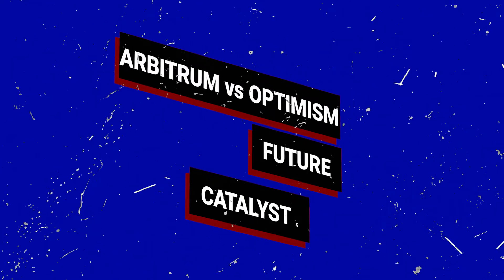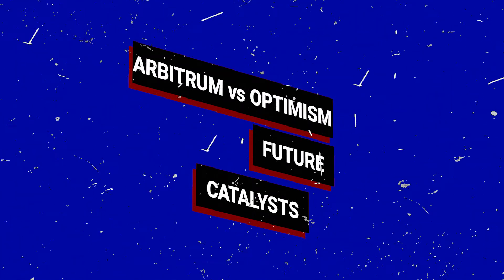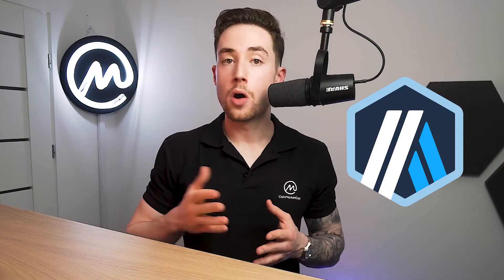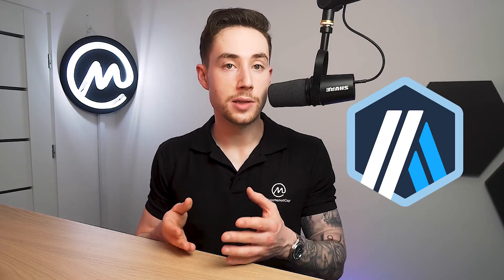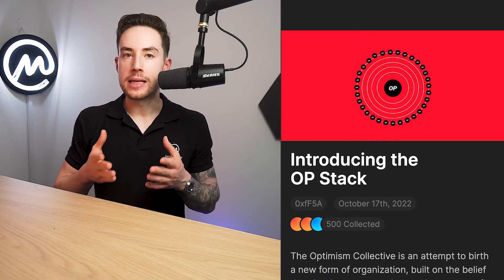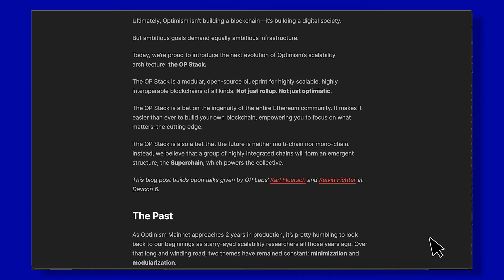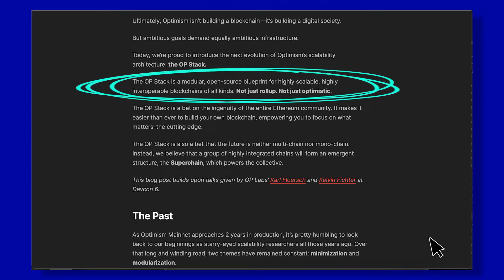Let's talk about Arbitrum versus Optimism and their future catalysts. Arbitrum is the clear leader among optimistic rollup L2s, but the two chains are pursuing slightly different approaches to grow their market share. Optimism explained its game plan in a blog post about the OP Stack. The OP Stack is Optimism's next phase of scalability — a series of modules that work as a blueprint for modular scalability and interoperable blockchains. Optimism designed this framework in a flexible way to make it applicable to various types of blockchains, not just optimistic rollups.